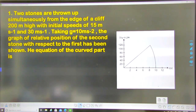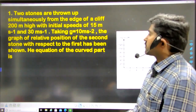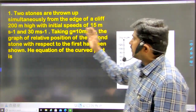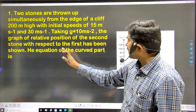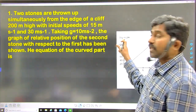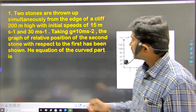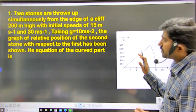Just refer the question and try to understand the information given. Two stones are projected from a 200 meter cliff with velocities 15 meter per second and 30 meter per second. The graph of relative position of the second stone with respect to the first stone — that means second stone position X2 and first stone position X1, giving relative position X2 minus X1. You have to write an equation for the curved part.